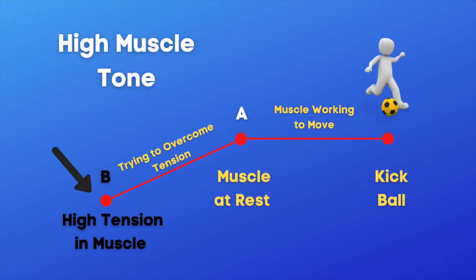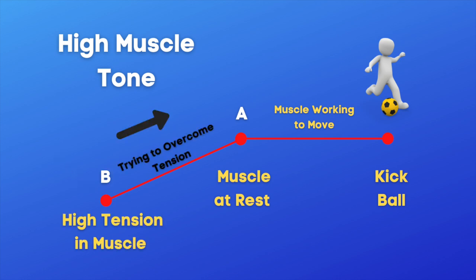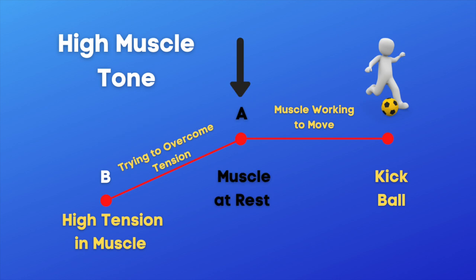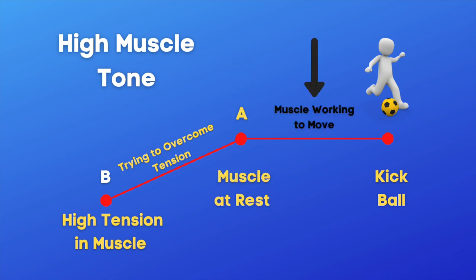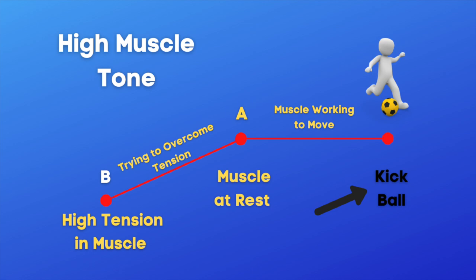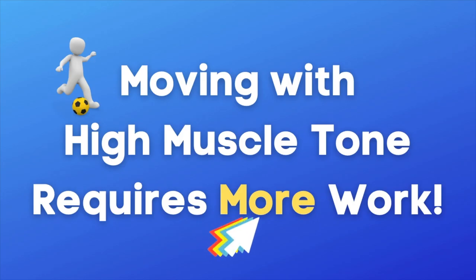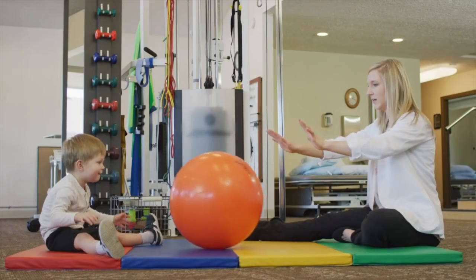Let's consider a person with high muscle tone. A person with high muscle tone also begins at point B, but with a different set of challenges. Their starting position is a muscle with more tension than it would normally have at rest. Their muscle starts working to try to overcome the tension already present in the muscle to get to that resting position, and then it must continue working to get to the action of kicking the ball. So again, this simple action takes twice as much work.